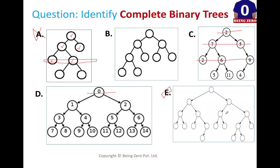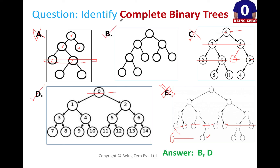I guess you would have figured out your answers. C is not a complete binary tree because at the third level we do not have all the children — there is a missing child. D is a complete binary tree. E is not a complete binary tree because at the last level, this node has left and right children missing. The definition says the last level should be filled left to right, and here the left is still blank. So looking at the answers, only B and D out of all these trees are complete binary trees.